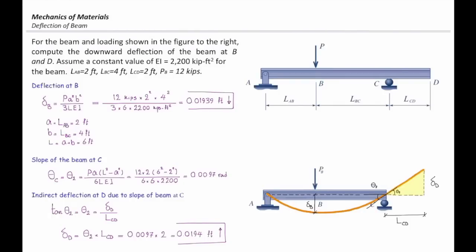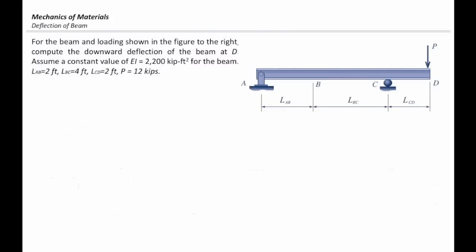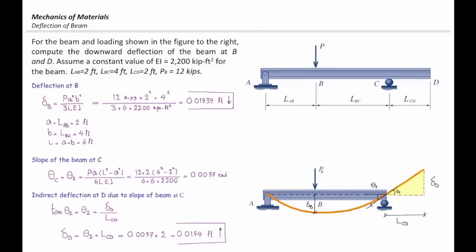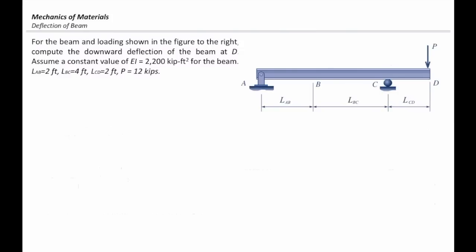Now let's extend the concept we learned to a case that is a bit more complicated. This problem is pretty similar to the one we just discussed — the only difference is we have moved the force to the very right part of the structure. That force now acts at point D. Everything else is the same: the length of the beam, EI, and the value of the force are unchanged, but P has moved from B to the very right part.